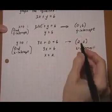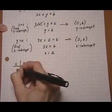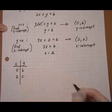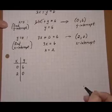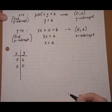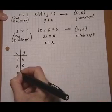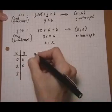So we have (0, 6) and (2, 0). And remember when you're graphing straight lines, you always want to have a third point. We can pick anything at all. So I'll pick x is 3. Let's see what that gives us.